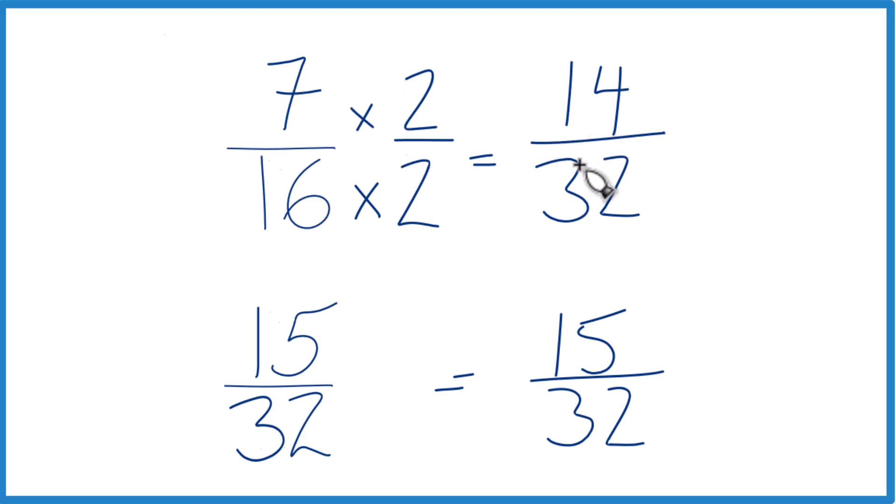They're equivalent fractions. But now we have the same denominators, so we'll just compare the numerators. And you can see, 15, that's greater than 14. So 15/32, that's greater than 14/32 by 1/32. These are equivalent, which means that 15/32 is also greater than 7/16.